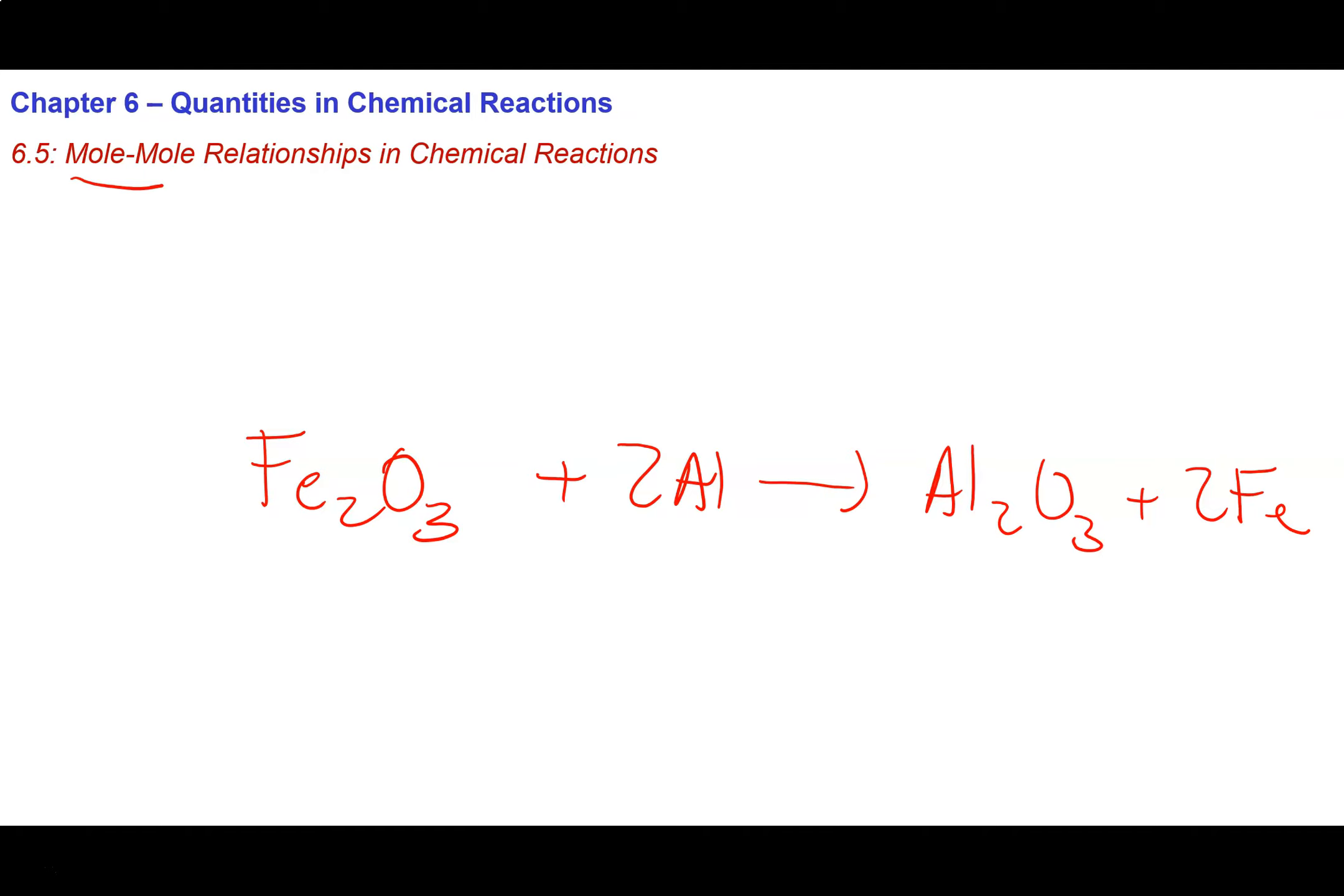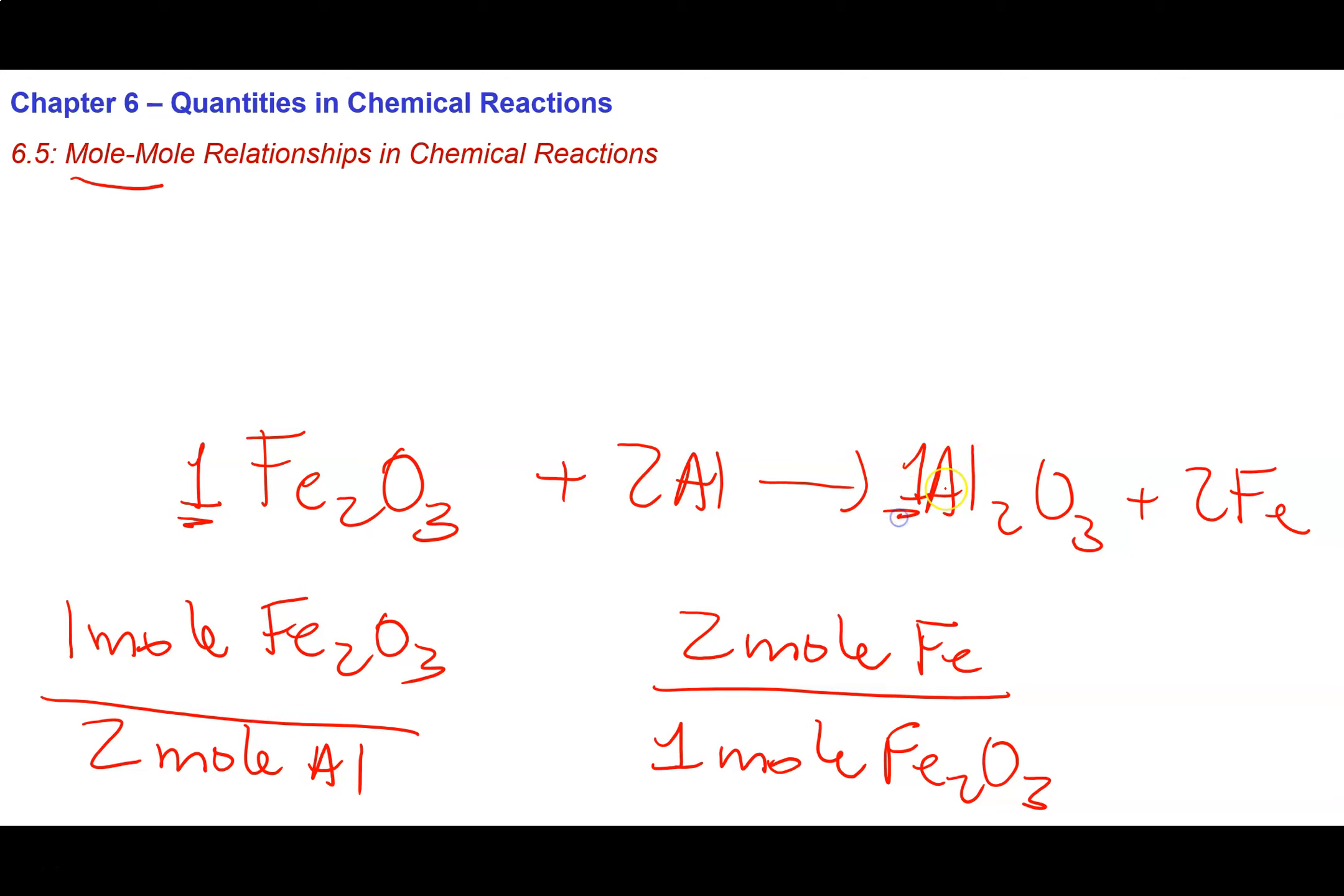I have the relationships between all of the reactants and the products spelled out for me. So I know that for every one mole of Fe2O3 consumed, I will also consume two moles of aluminum. I know that for every two mole of Fe produced, I will consume one mole of Fe2O3. And the reason that I know this is because I have my reaction coefficients.